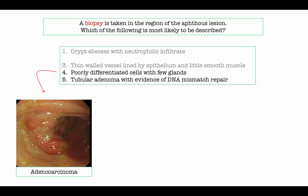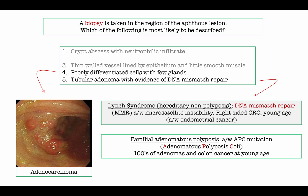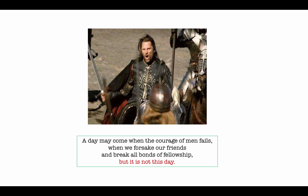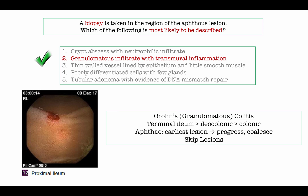The last two options refer to adenocarcinoma, which would not present with aphthae, and two of the hereditary colorectal syndromes — important material, but not for today. The correct answer for question two is granulomatous infiltrate with transmural inflammation. Aphthae are most assuredly an early manifestation of Crohn's disease and best fit this presentation.